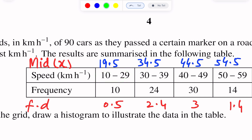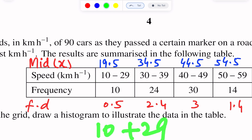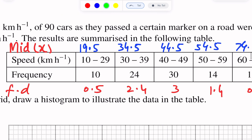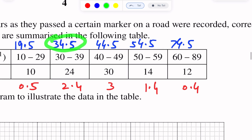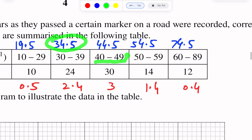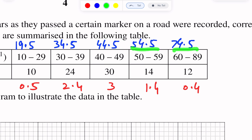For the first interval 10 to 29, the mid-value = (10 + 29) ÷ 2 = 19.5. For the next interval 30 to 39, mid-value = (30 + 39) ÷ 2 = 34.5. For 40 to 49, mid-value = (40 + 49) ÷ 2 = 44.5, and so on for the remaining intervals.